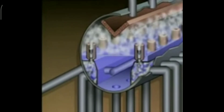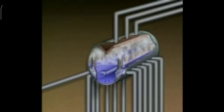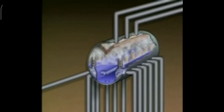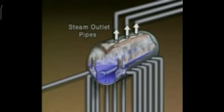The steam rises into the upper part of the drum. The steam could still have some water mixed in with it, so it is sent through dryers, which are located in the top of the drum. The dryers remove as much water as possible before the steam leaves the drum. This is important because water that flows out of the drum with the steam could damage downstream components. The steam is discharged from the drum through steam outlet pipes.